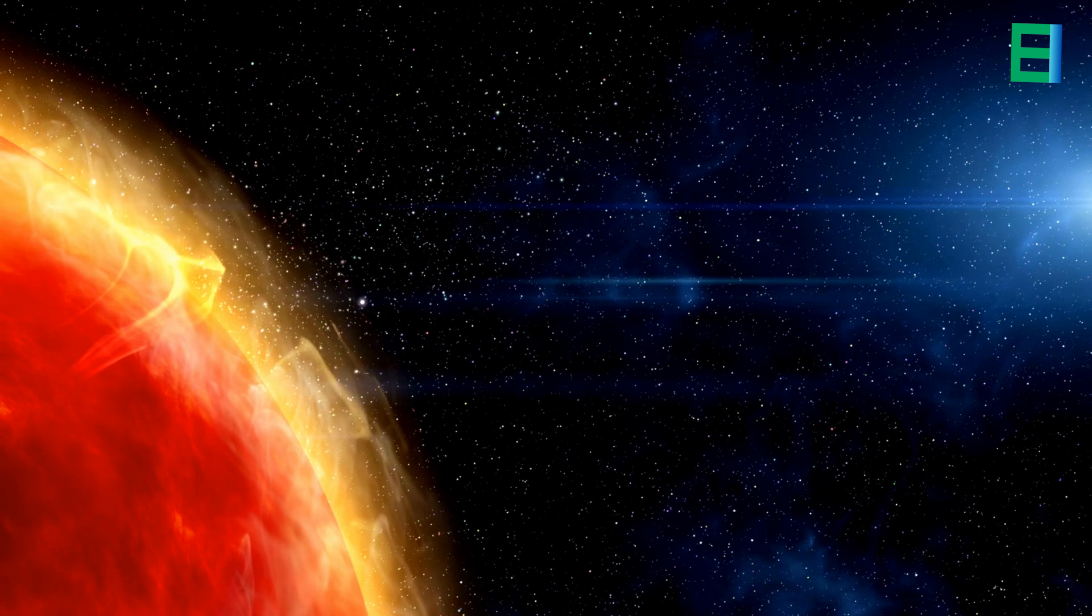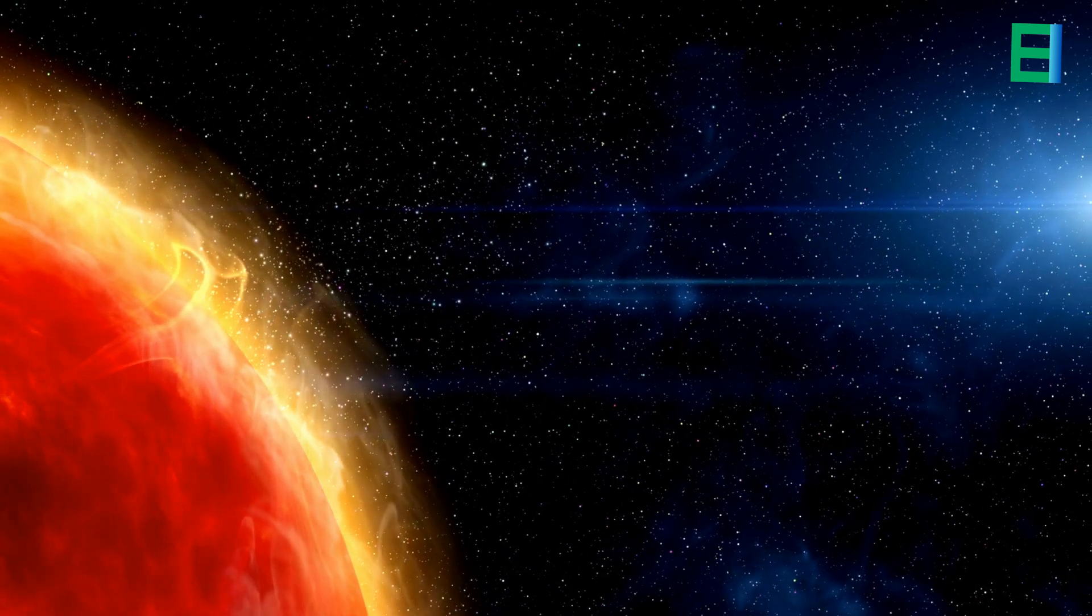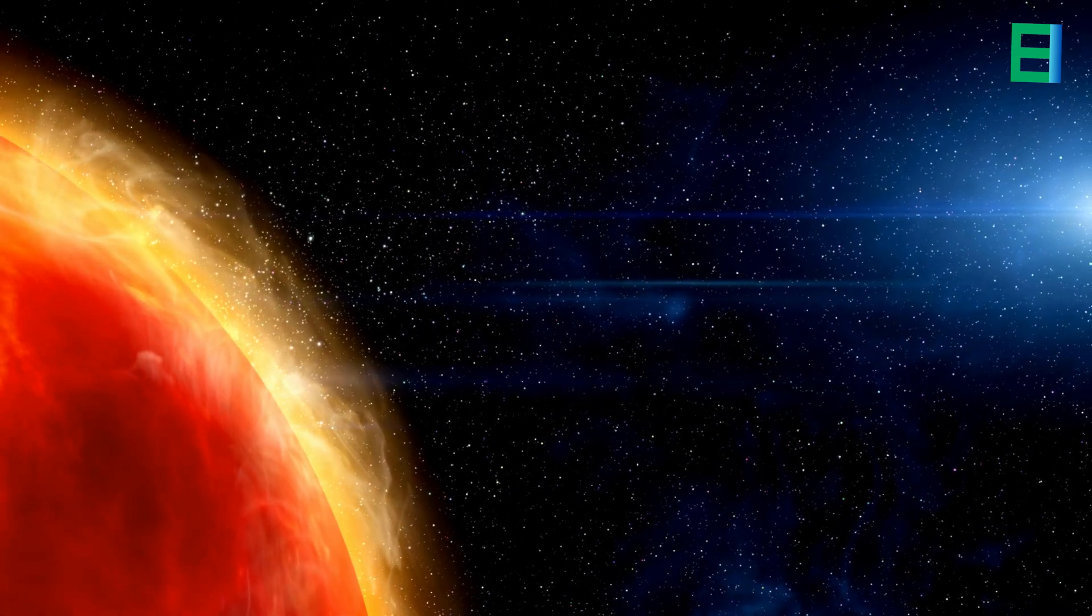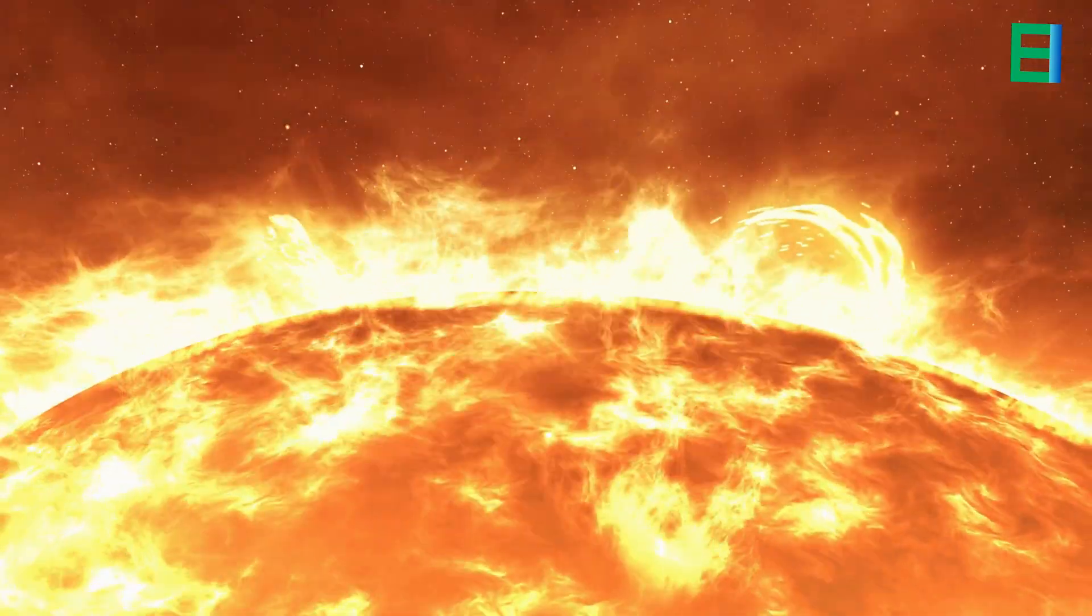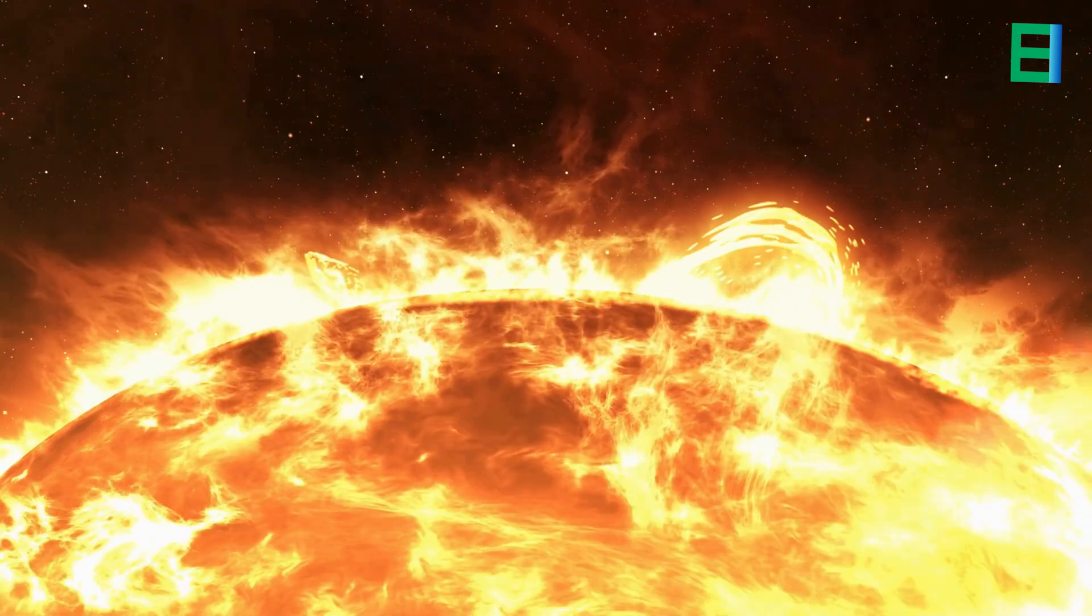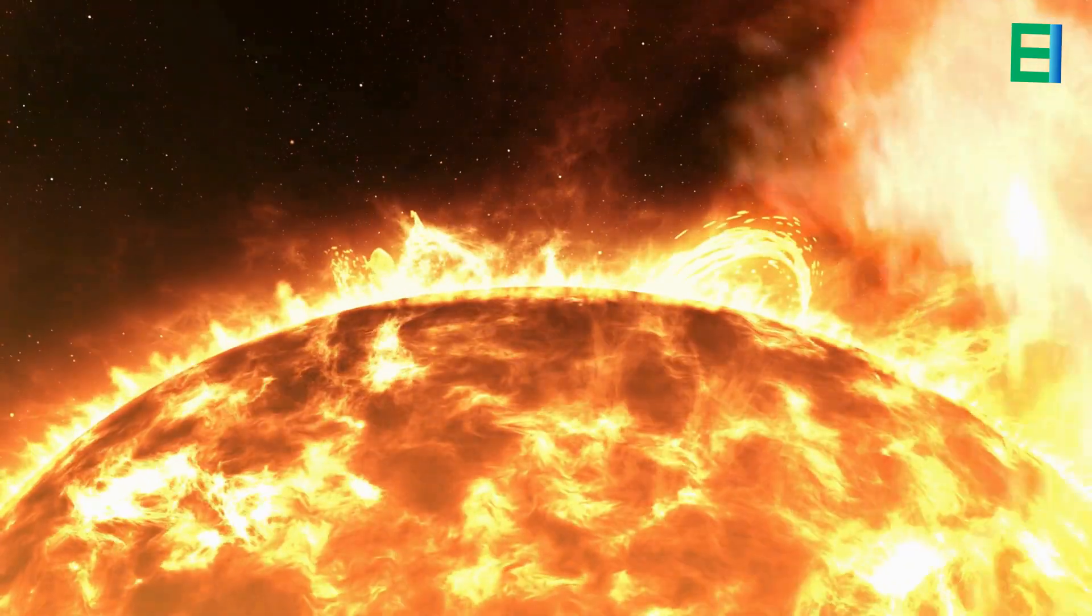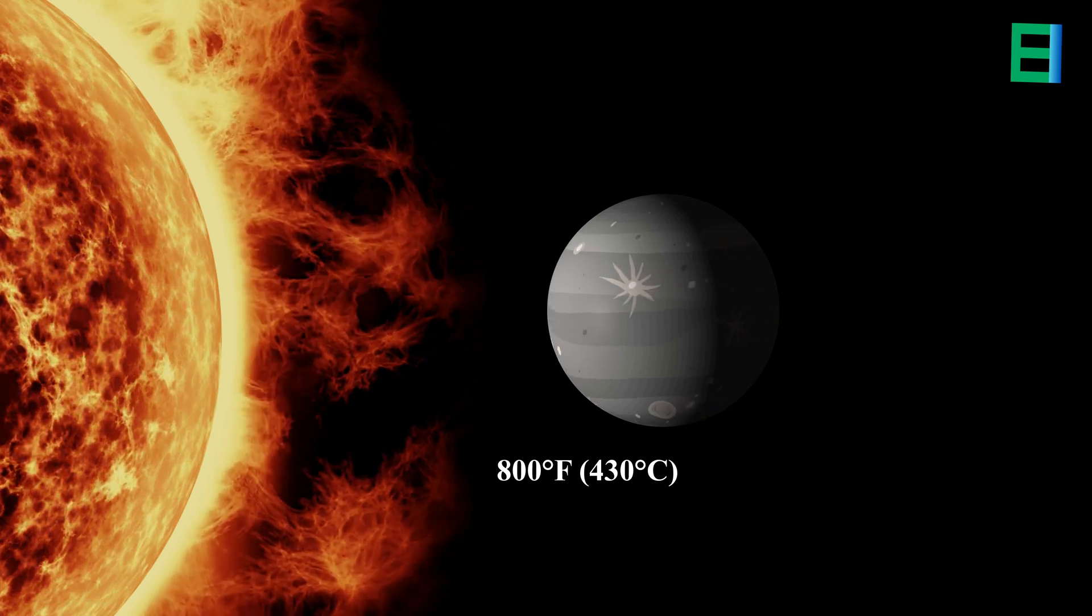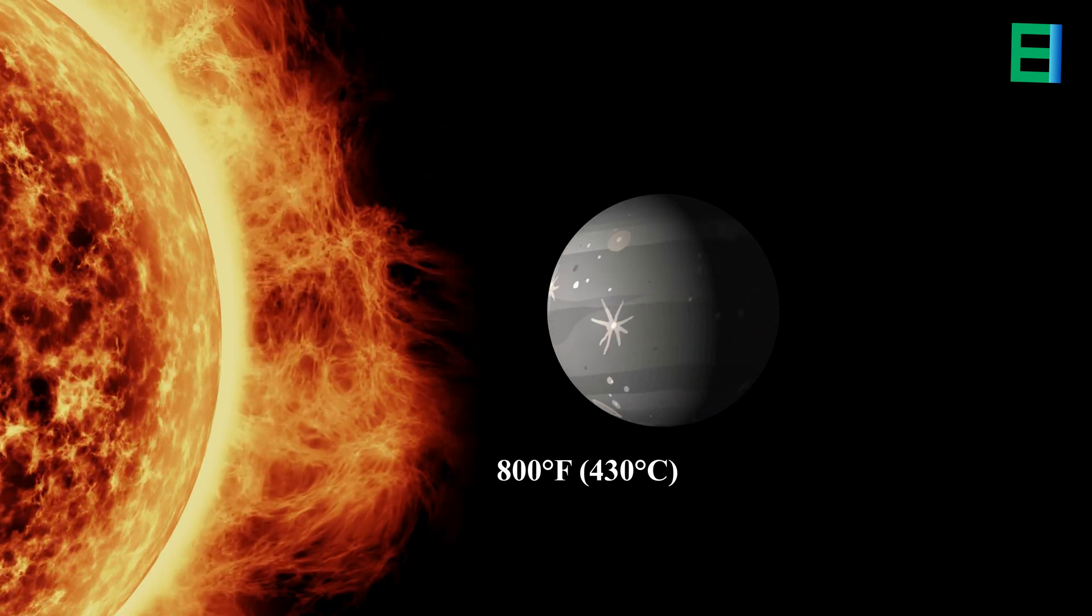The lack of a substantial atmosphere on Mercury has significant implications for the planet's surface conditions. Without an atmosphere to trap heat, temperatures on the surface of Mercury can vary dramatically, ranging from scorching hot during the daytime, reaching up to 800 degrees Fahrenheit, to bitterly cold at night, dropping to around negative 290 degrees Fahrenheit.